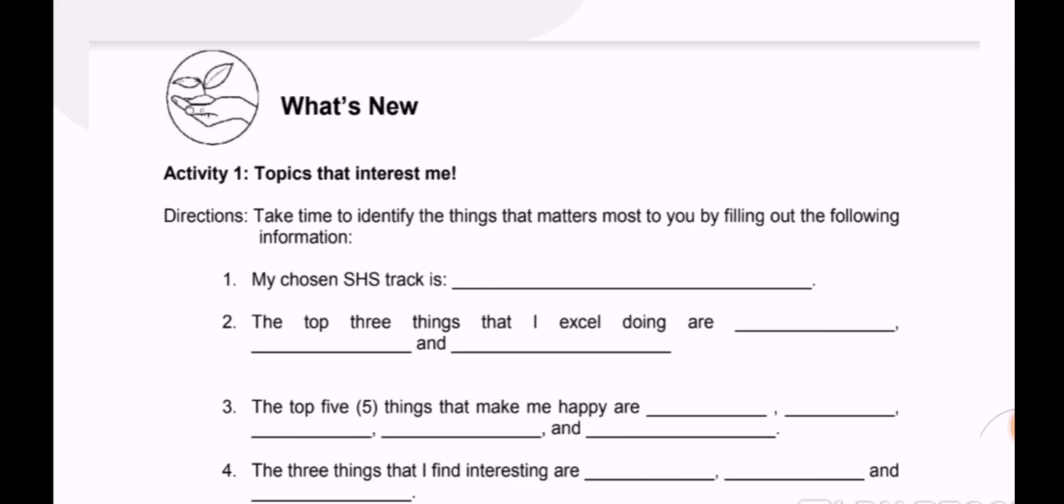You could put five things that make you happy, and then three things that you find interesting—things that interest you or that you want to know more about. What we will do is answer this and from the answers, let's come up with a research title.